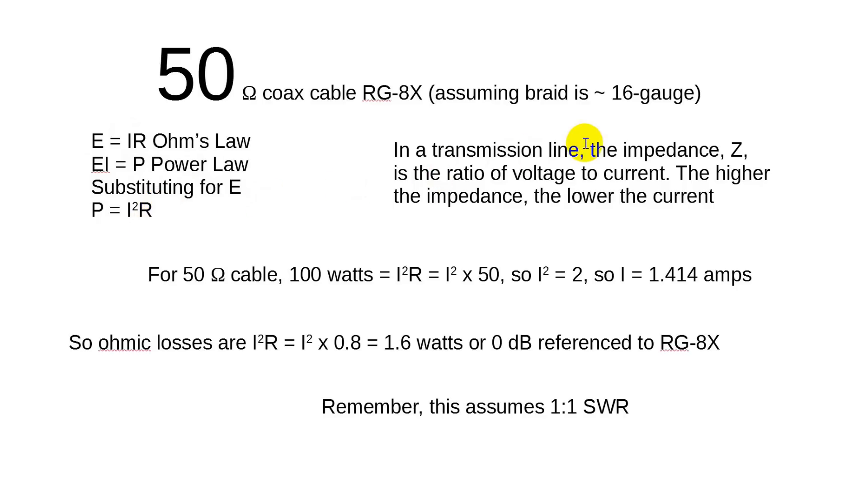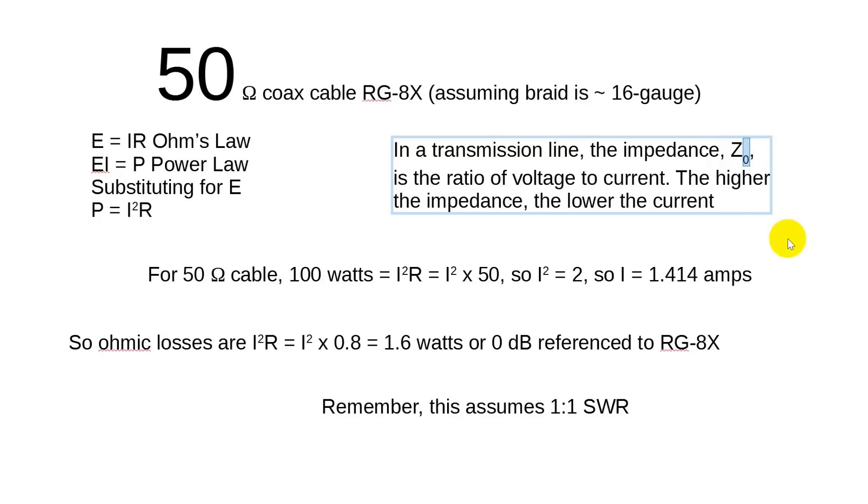Now in a transmission line, any transmission line at radio frequency, the impedance Z₀, because usually the characteristic impedance is referred to as Z₀, is the ratio of the voltage to the current. See here? The ratio of the voltage to the current gives you the impedance. P equals I²R. If you solve Ohm's law for R, R equals E over I. So the impedance is the ratio of the voltage to the current. The higher the impedance, the lower the current. That's very important. If you go with a higher impedance, then that means the voltage is higher and the current is lower. That's the key thing here.